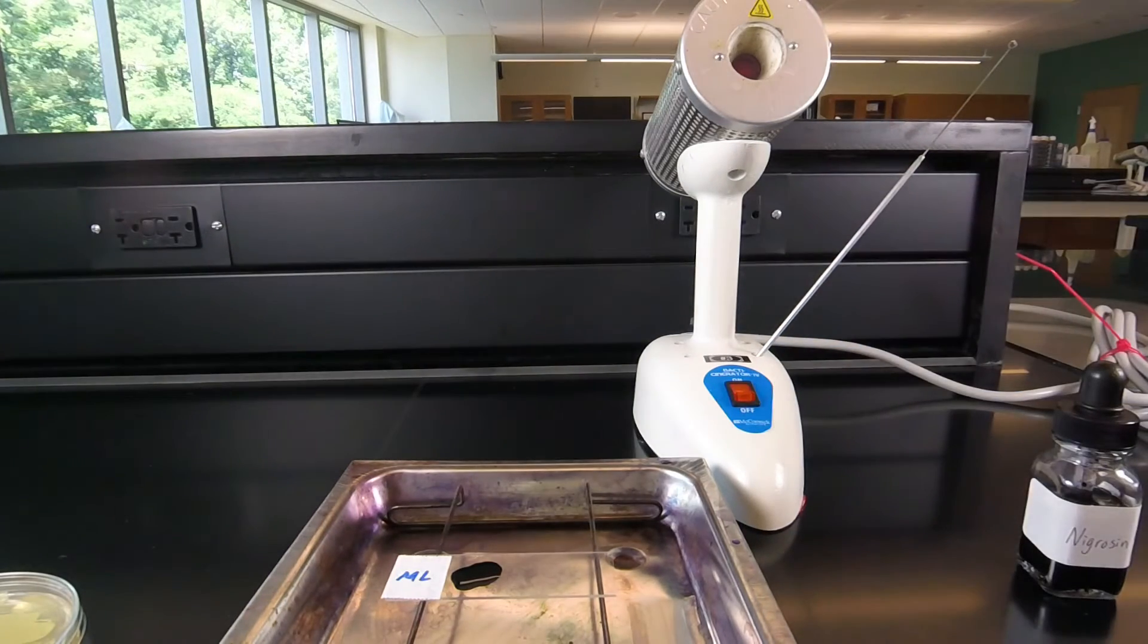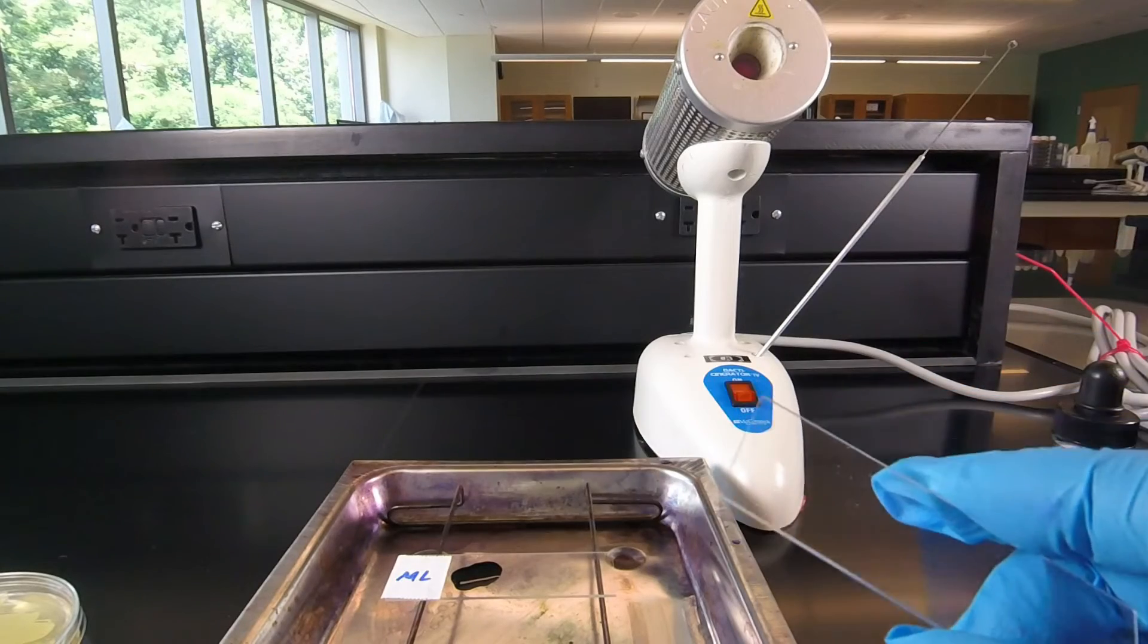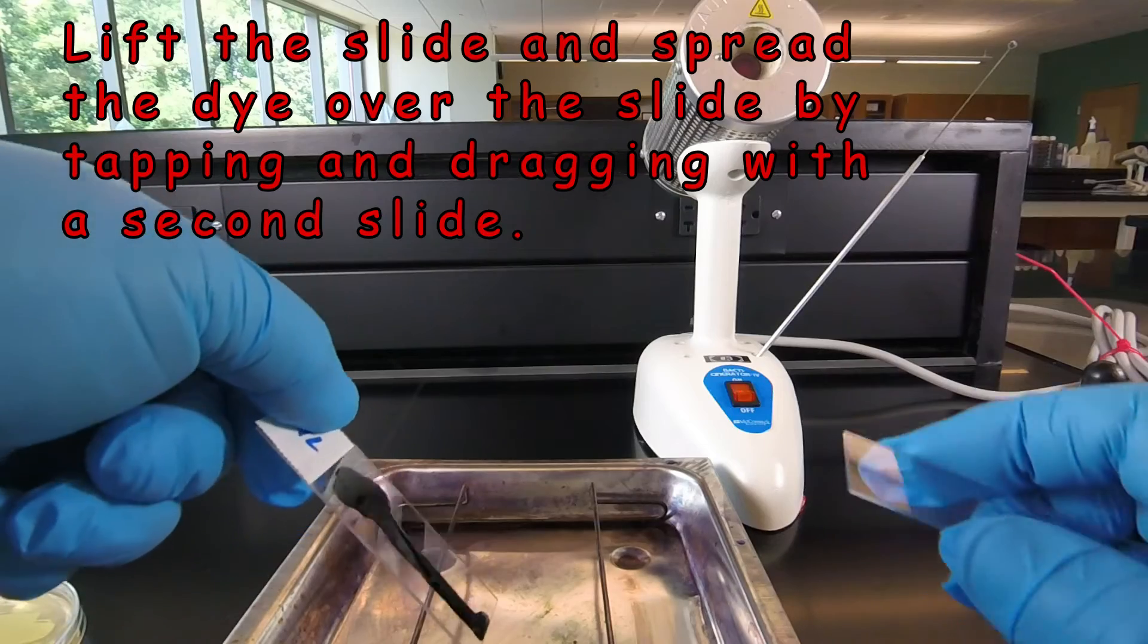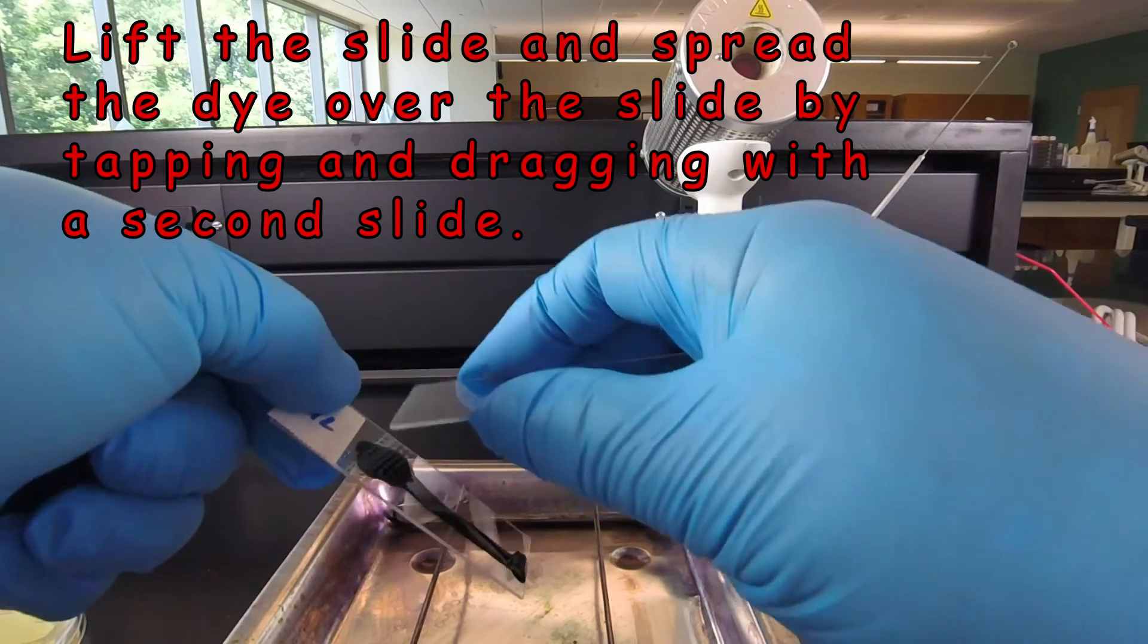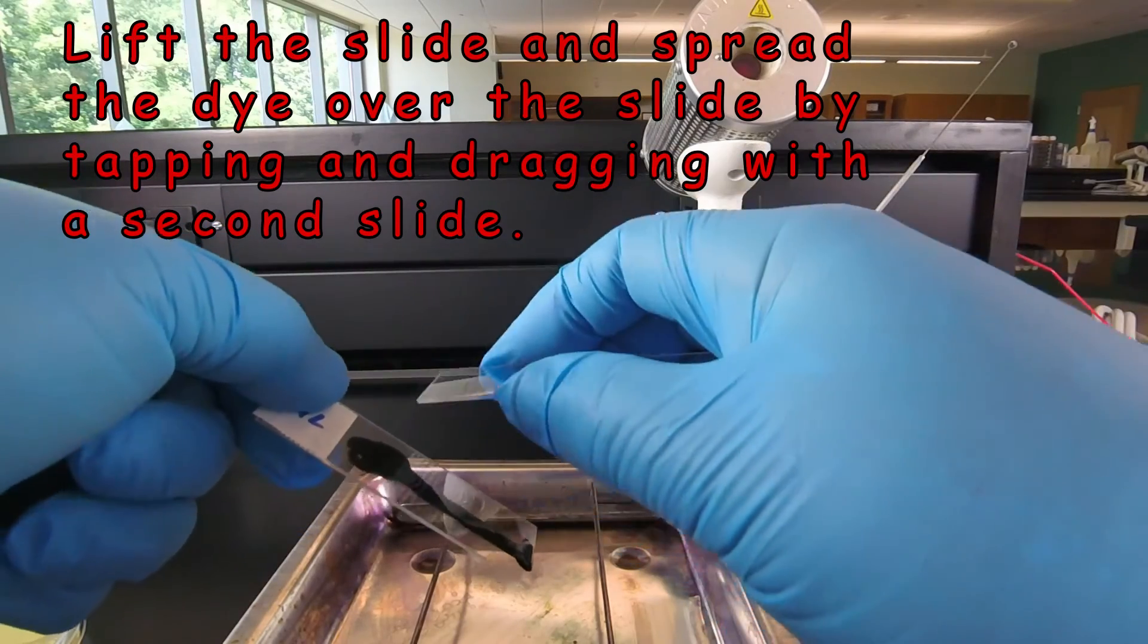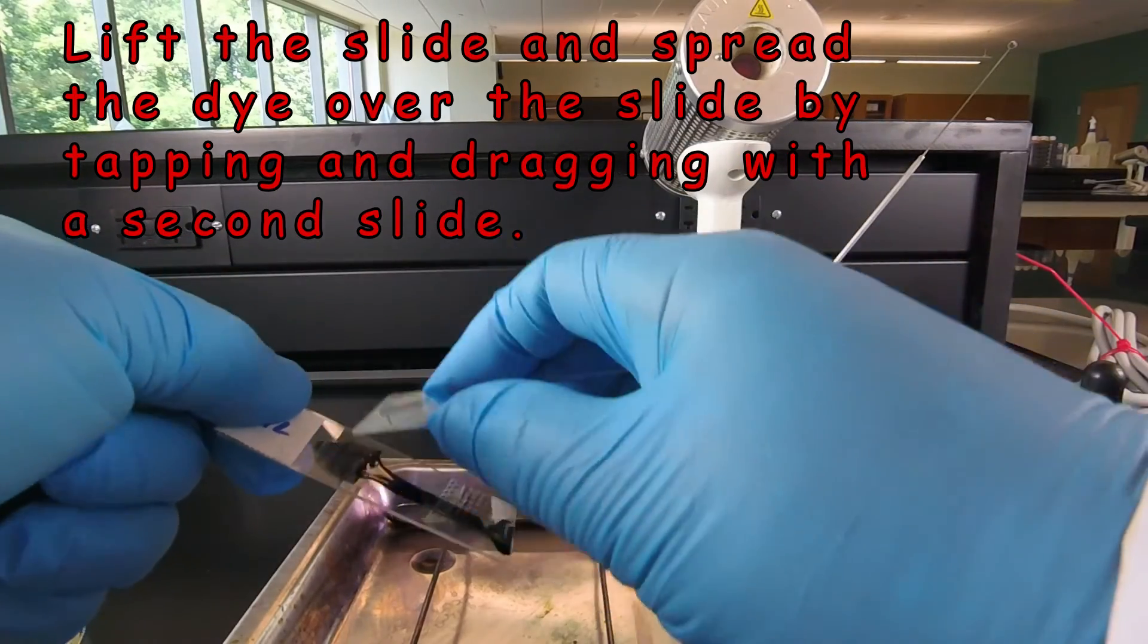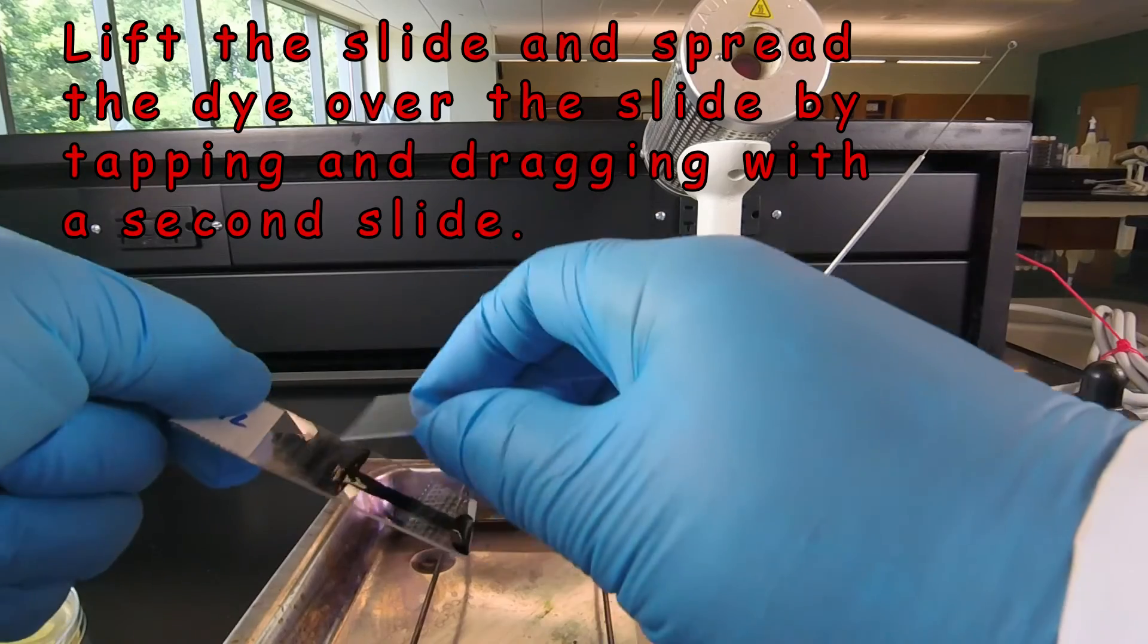And what we're going to do now is take the edge of another microscope slide, pick up our indirect stain, hold it over the tray, and we're going to start rubbing the slide down, tapping it to the side with a tap and drag motion. We tap it and drag it like this.